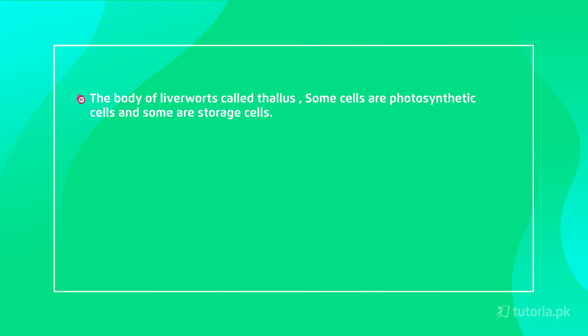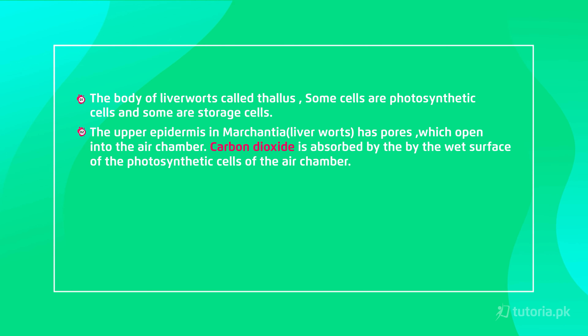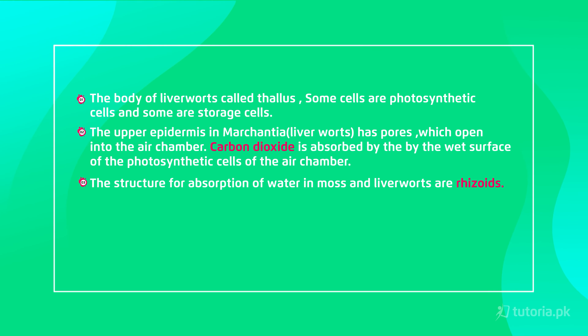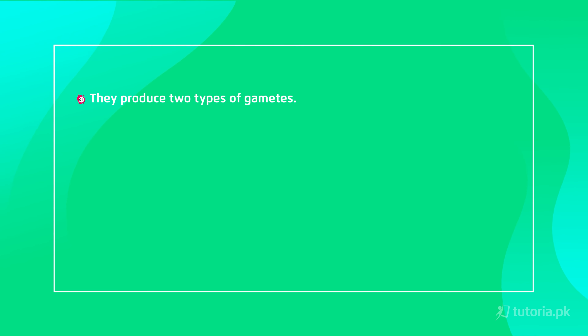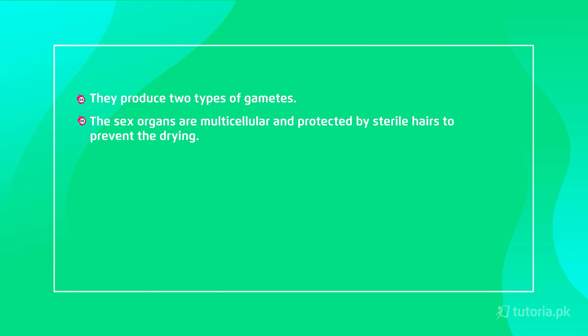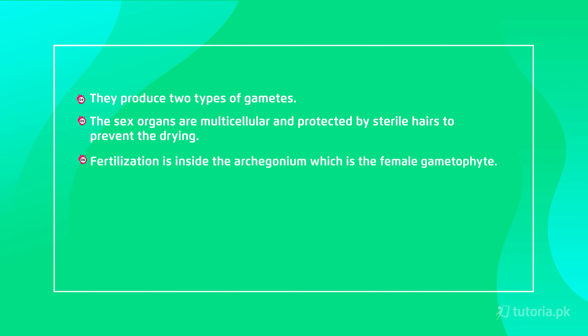Now let's talk about bryophyte land adaptation. Bryophytes don't have true leaves, roots, or specialized tissues, so they absorb water and carbon dioxide directly from the environment. Their body, called the thallus, contains photosynthetic cells and storage cells. The upper epidermal layer has pores that open into chambers, allowing carbon dioxide to reach the photosynthetic cells. They absorb water through rhizoids since they lack true roots. They produce two types of gametes, and their sex organs are multicellular and protected by sterile cells to prevent drying. Fertilization occurs in the archegonium, which is the female gametophyte.